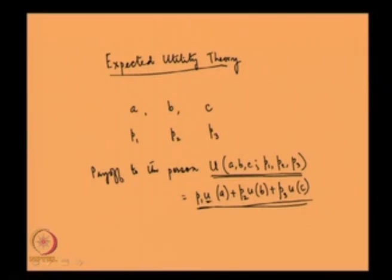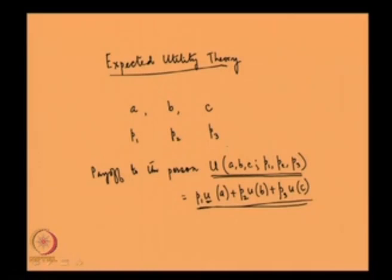The small u's are defined over certain outcomes. If outcome A happens, then small u of A represents the payoff to the player from that certain outcome. But B and C can also happen, so the total payoff to the person is the expected utility of these individual payoffs — represented by capital U. We can do so only if the player's preference follows the von Neumann-Morgenstern property. This small u is known as the Bernoulli payoff function or the Bernoulli utility function.